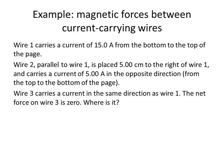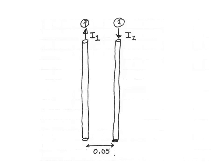Wire 3 carries a current in the same direction as wire 1. The net force on wire 3 is 0. Where is it? So the first thing we're going to do is draw wire 1 and wire 2 5 cm apart, with wire 1 carrying current towards the top of the page and wire 2 carrying a current towards the bottom of the page.